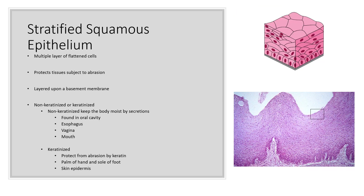Next is stratified squamous epithelium. It's stratified, so it's multiple layers of flattened cells. This tissue type functions in protecting tissues that are subject to abrasion. It's also layered upon a basement membrane. There are two types: non-keratinized and keratinized. Non-keratinized, in particular, keeps the body moist by secretions. You find this in your oral cavity, your esophagus, the female vagina, and the mouth.